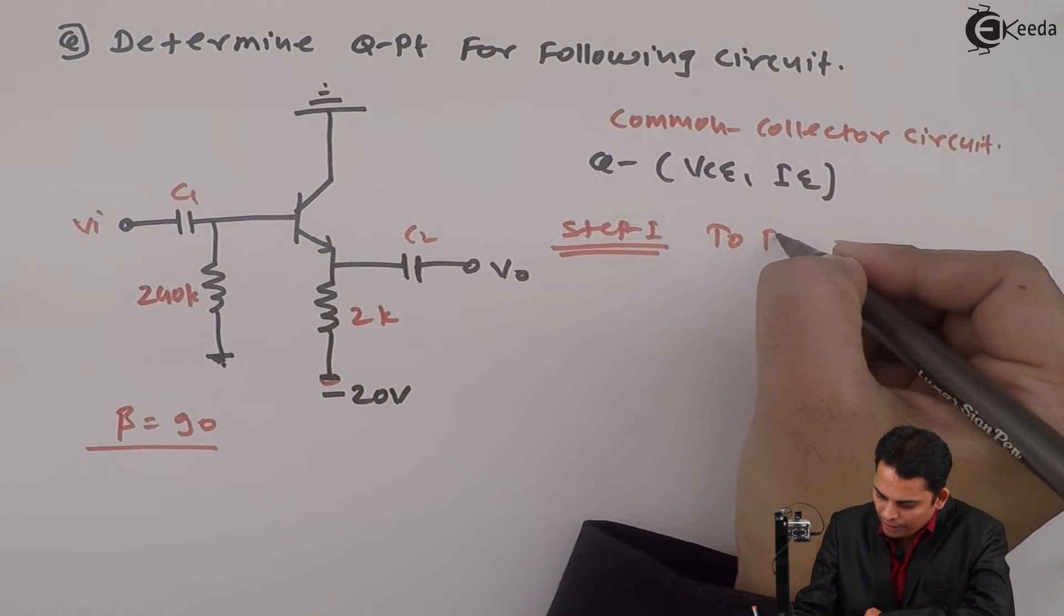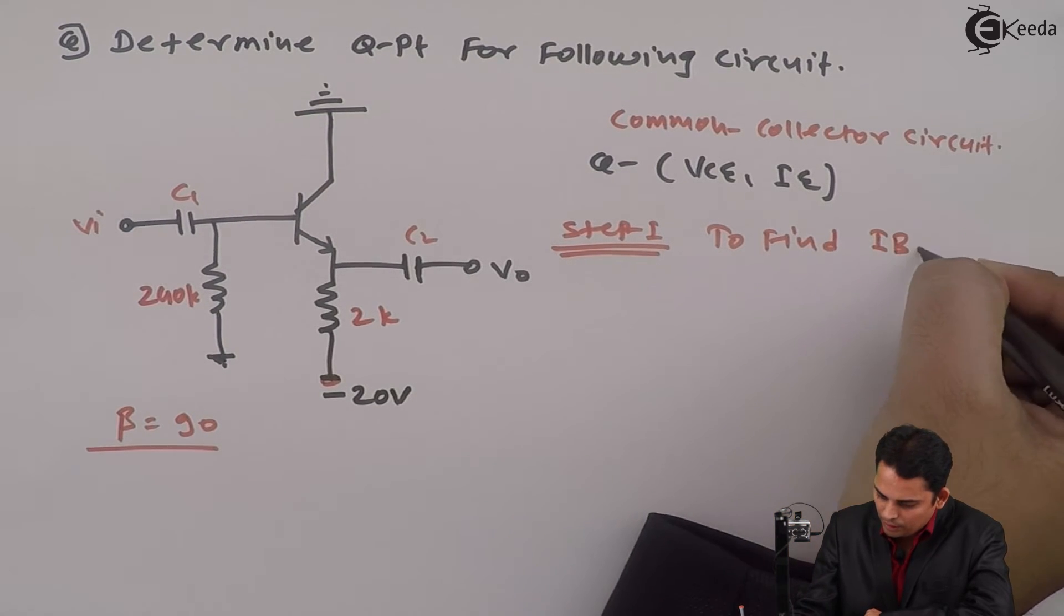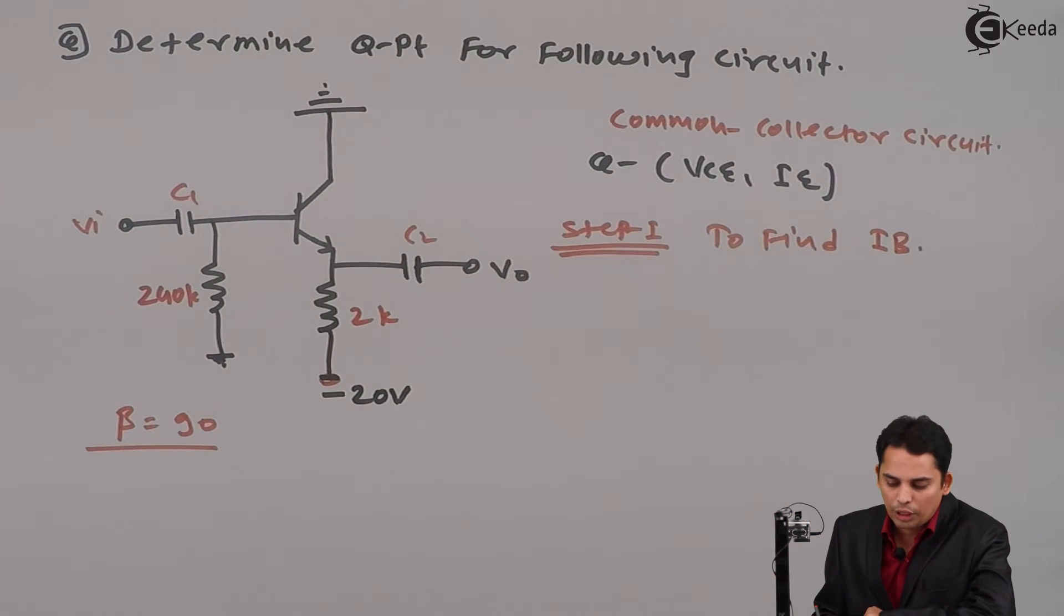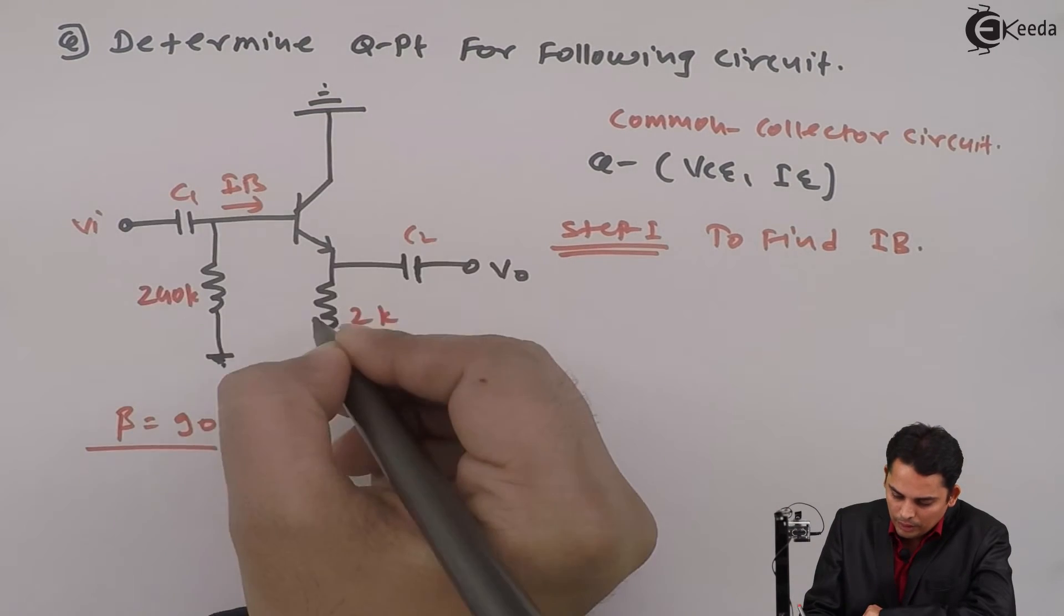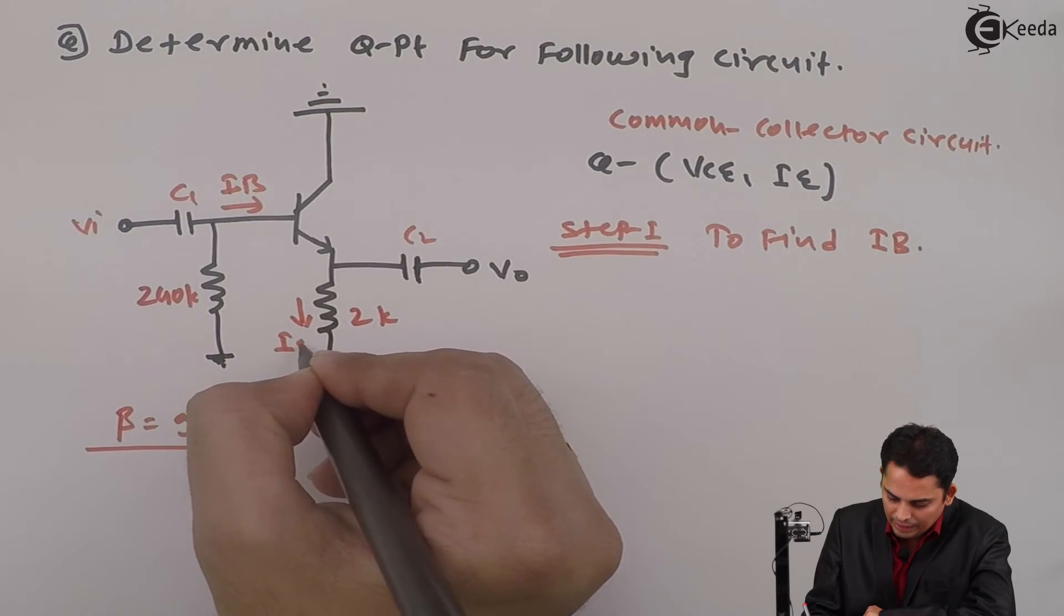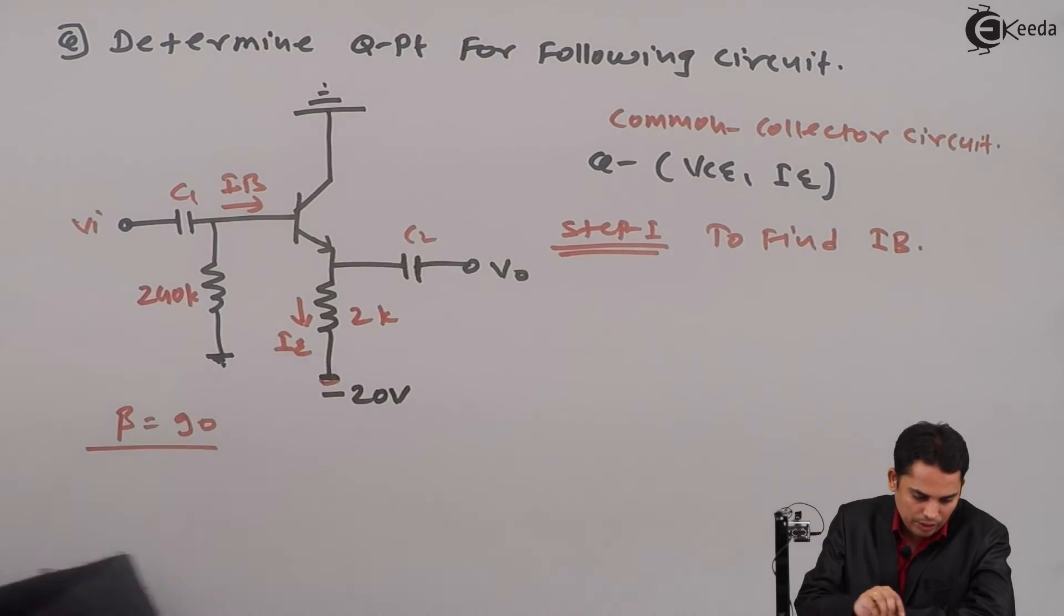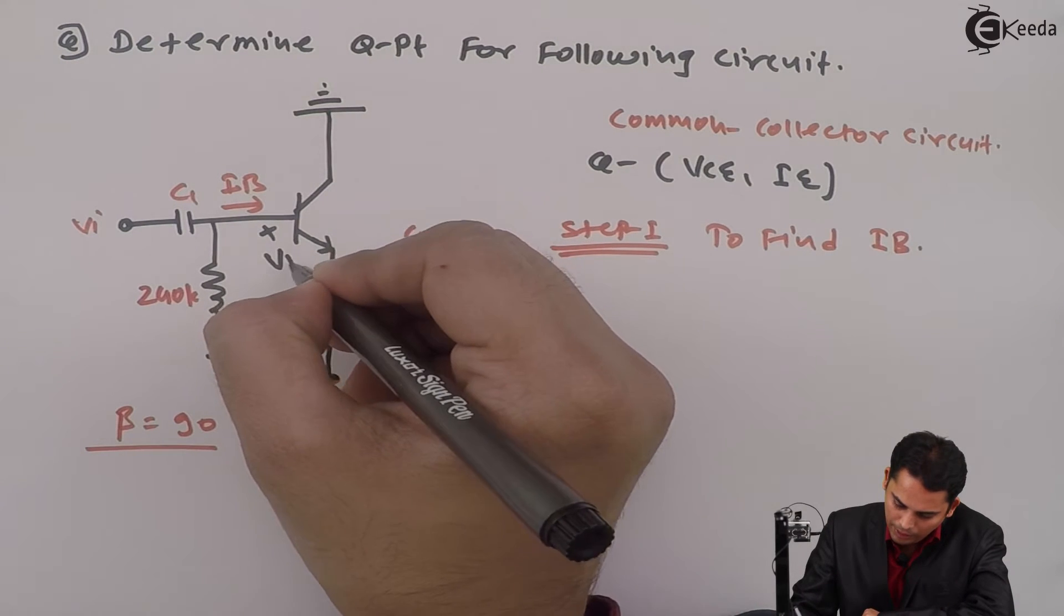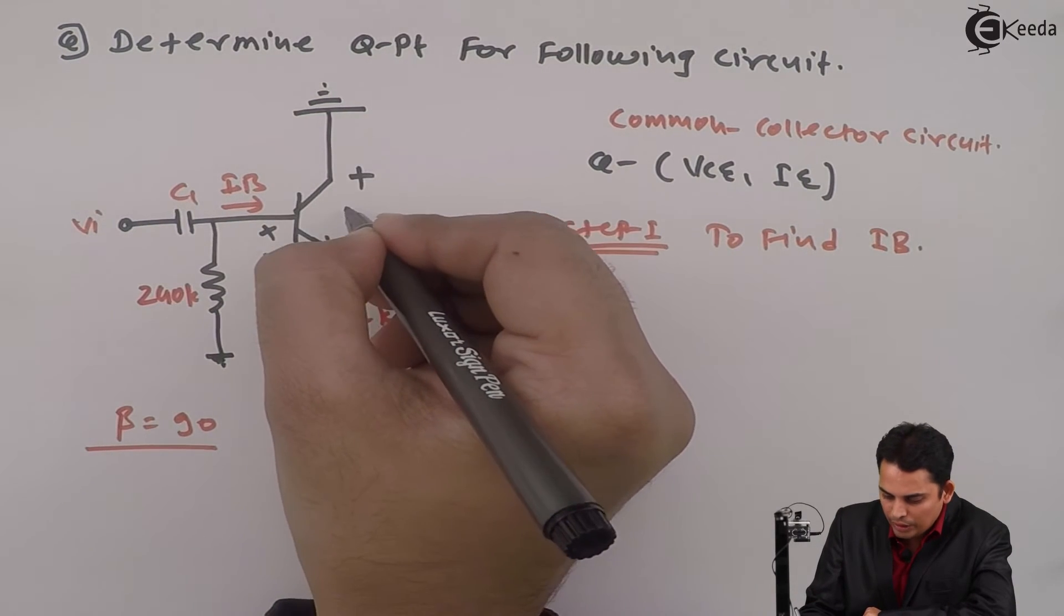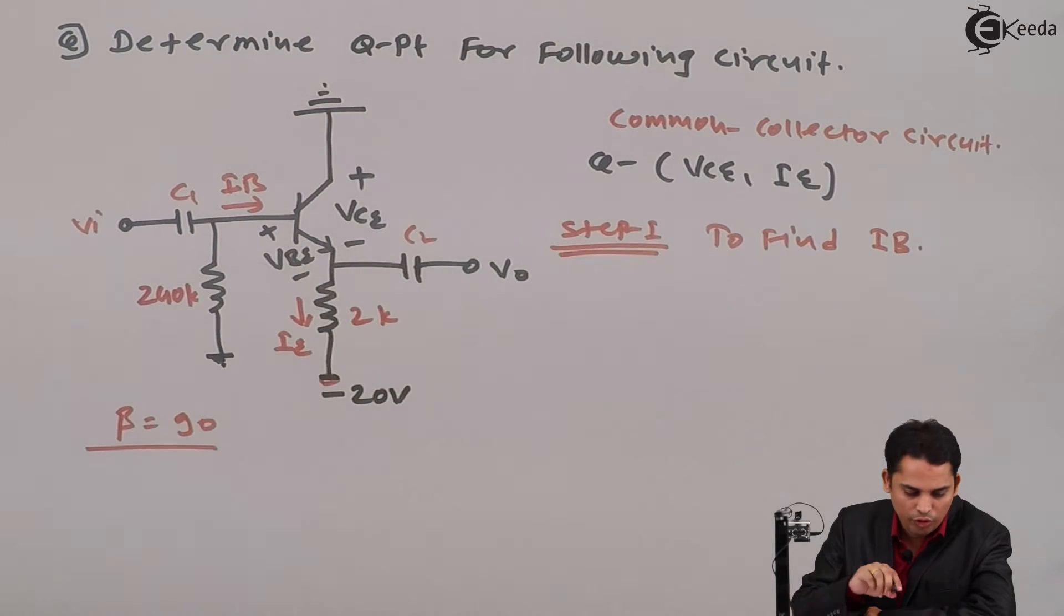Step 1 is to find base current IB for which apply KVL to the input. So this current is IE. So this current is IB whereas this current is IE. This voltage between base to emitter is called as VBE. Voltage between this collector to emitter is called as VCE.